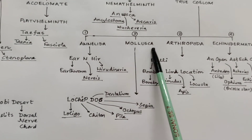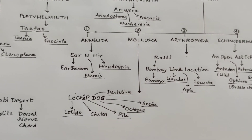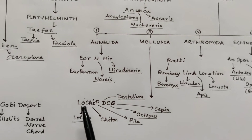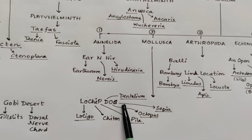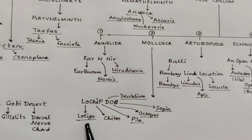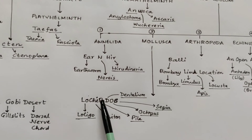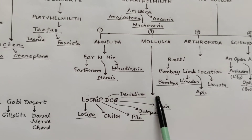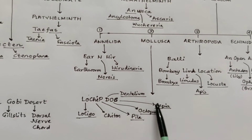The third one is Phylum Mollusca. You have to remember the computer term 'Low Chip DOS.' 'Lo' for Loligo. 'Chi' for Chiton. 'P' for Pila. 'D' for Dentalium. 'O' for Octopus. 'S' for Sepia.